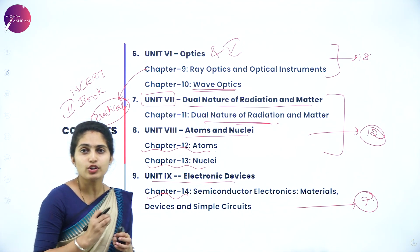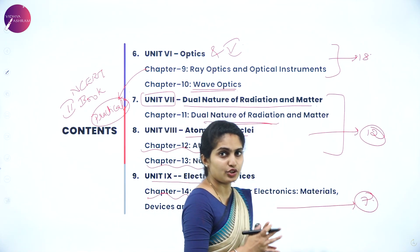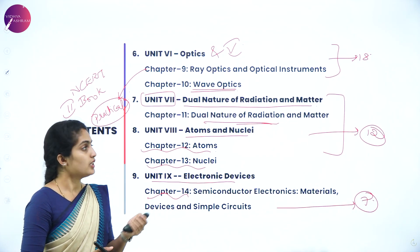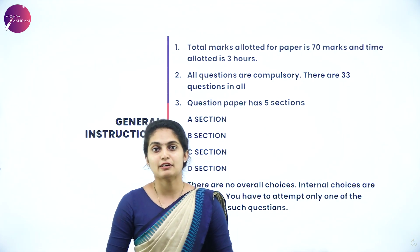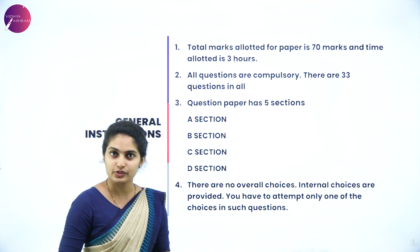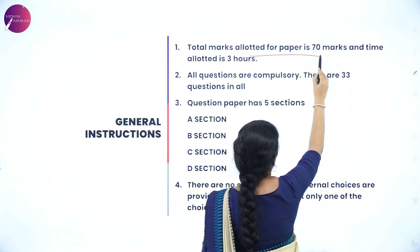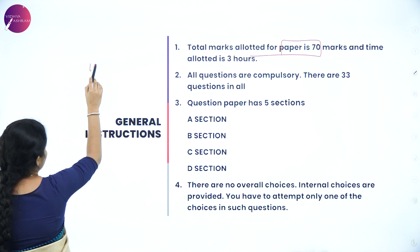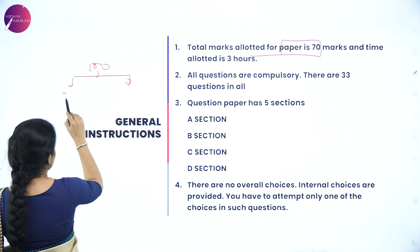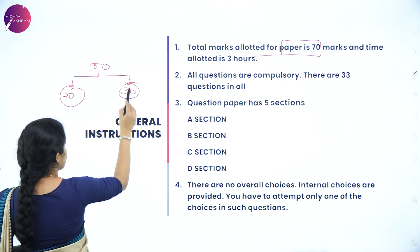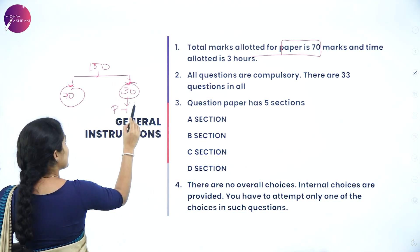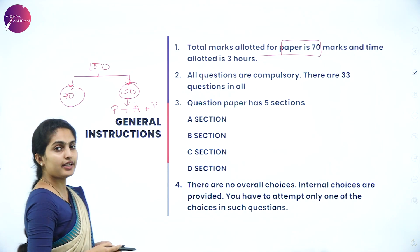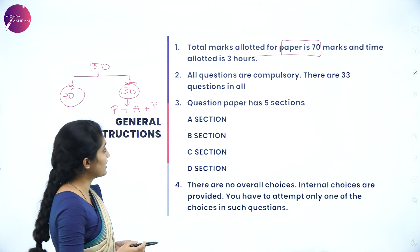The marks allotted for each unit have now been covered. In CBSE Class 12, the total marks for the theoretical paper is 70 marks. Out of the total 100 marks, 70 are for the theory paper and 30 are for practicals, which includes practical experiments, activities, and project work.